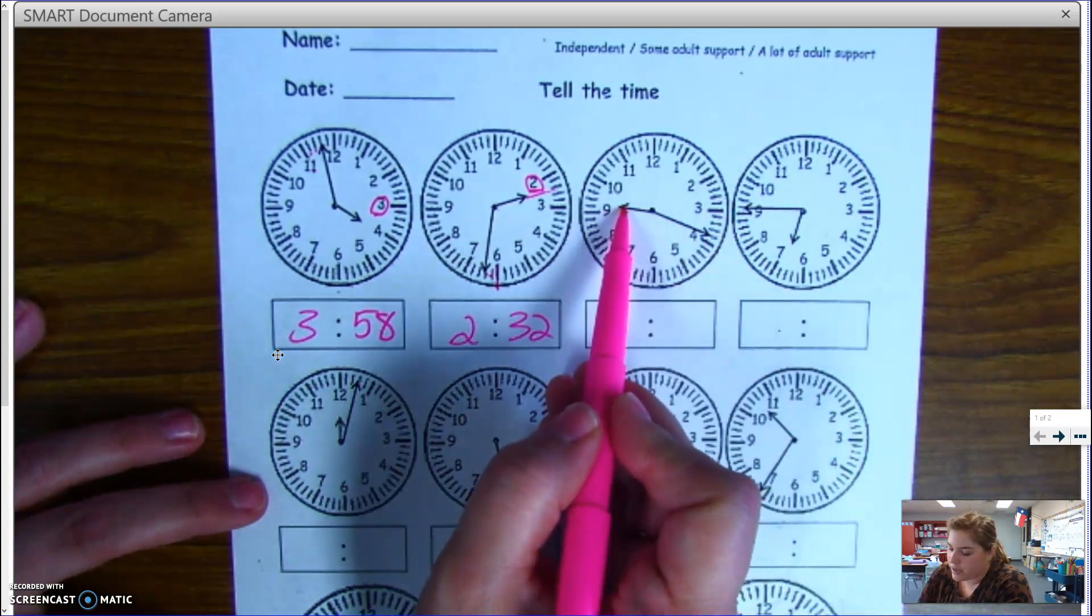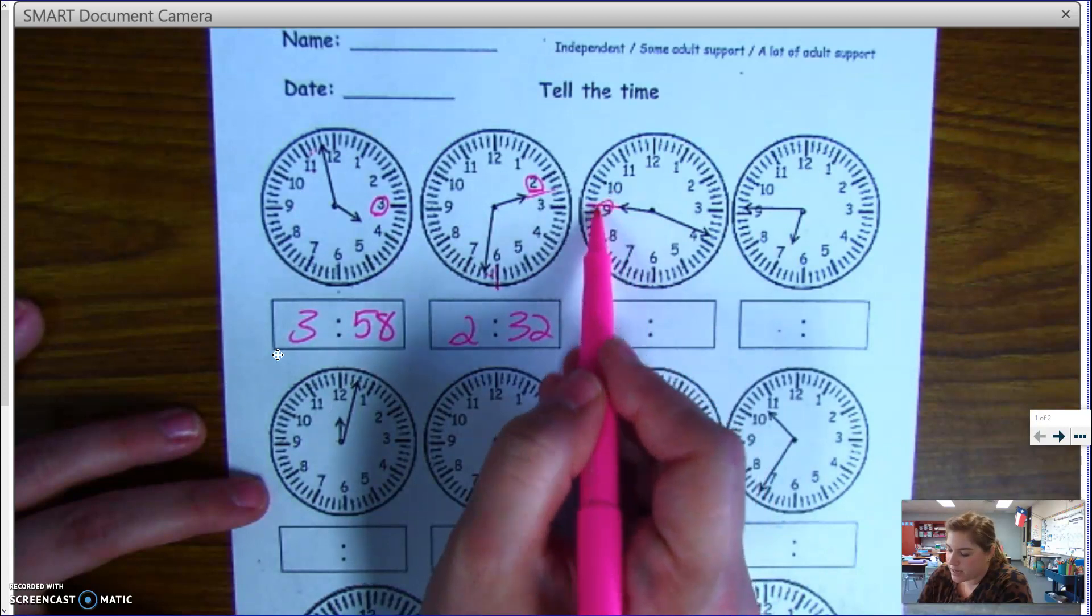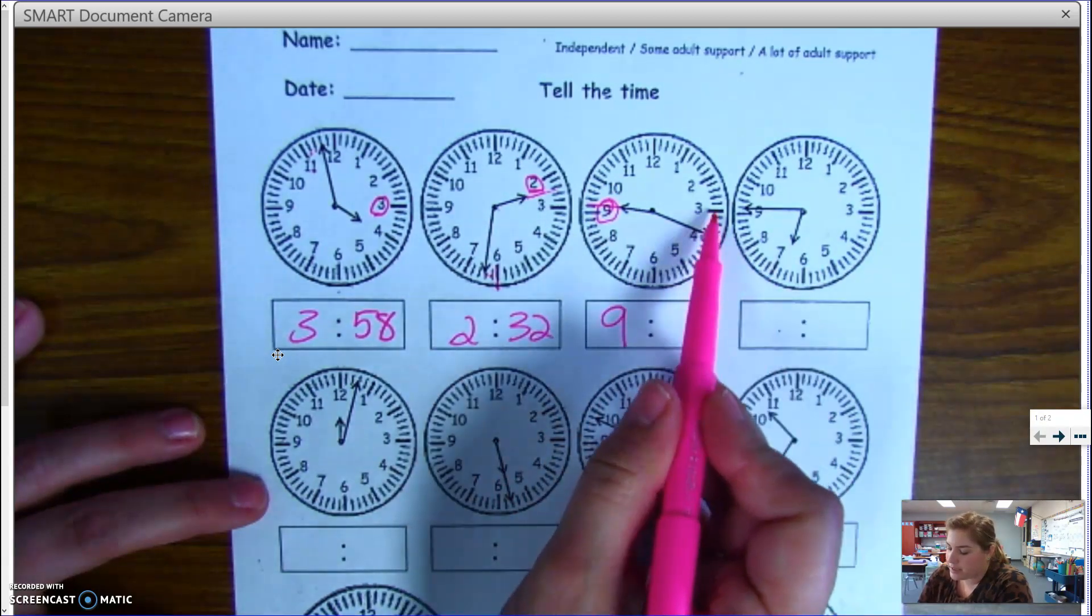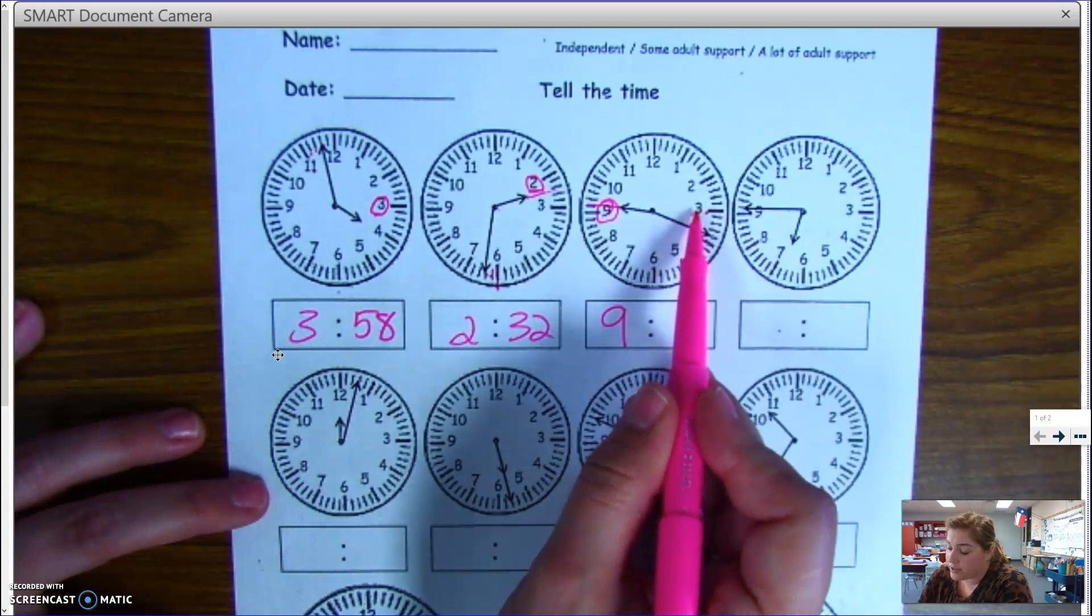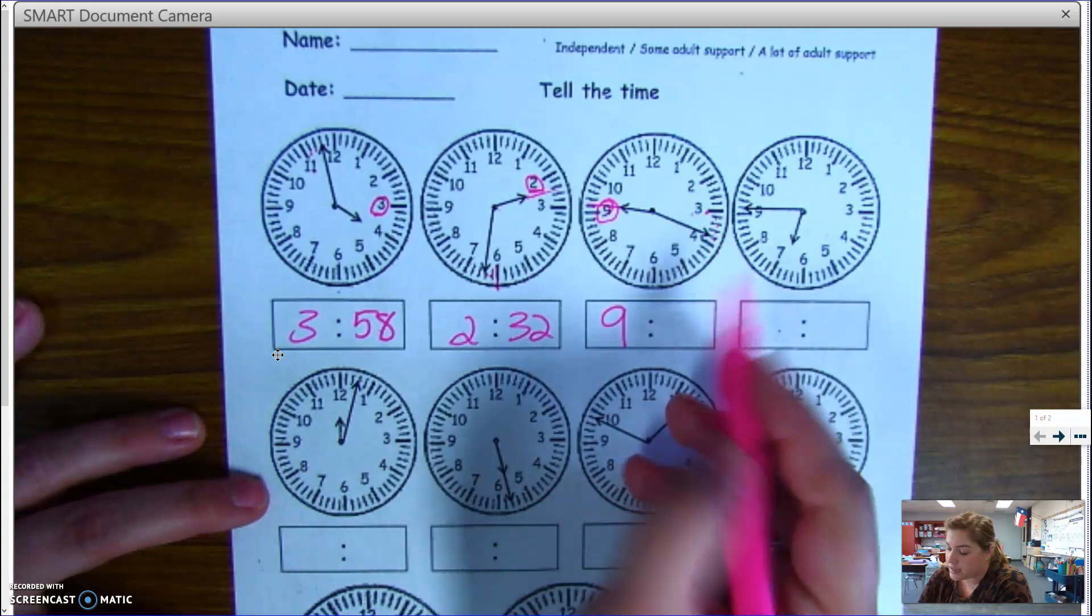Here I see my hour hand again is between the nine and the ten. So I know my hour is nine. And my minutes, three is at fifteen minutes. So sixteen, seventeen, eighteen, nineteen.